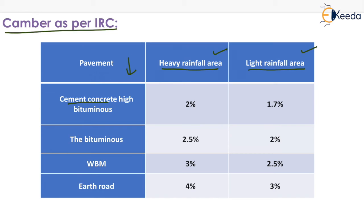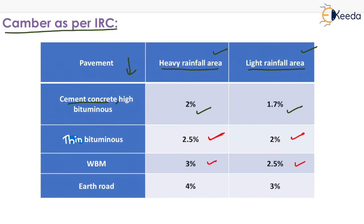For cement concrete or high bituminous pavement: heavy rainfall area — 2%, light rainfall area — 1.7%. For thin bituminous pavement: heavy rainfall area — 2.5%, light rainfall area — 2.5%. For water bound macadam: heavy rainfall area — 3%, light rainfall area — 2.5%. For earth road: heavy rainfall area — 4%, light rainfall area — 3%. That is all about camber.